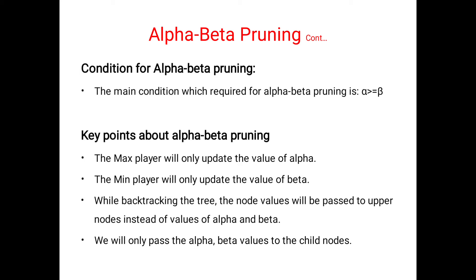Another important point is that node values will be passed to upper nodes instead of the values of alpha and beta. At each and every node we find out the alpha and beta values. We pass the alpha beta values only to child nodes when moving to the bottom side.